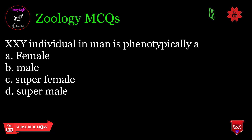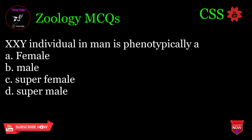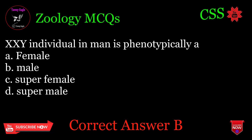XXY individual in man is phenotypically: A. Female, B. Male, C. Superfemale, D. Supermale. Correct answer: B.